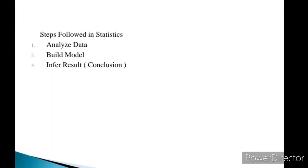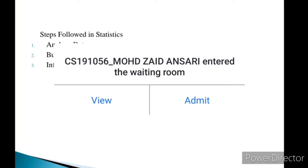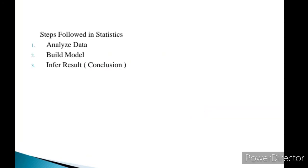You should know the steps followed in statistics. First, you analyze the data — raw data or historical data. Second, you build the model. Third, you infer results, which you can also call the conclusion. Basically, you do three parts in statistics: first, analyze the data; second, build a model based on that; third, based on that model, a result is concluded and a decision is made regarding the progress of the organization or company.